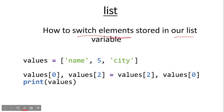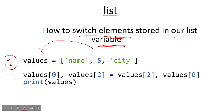How to switch elements stored in our list variable. First, we'll create our list variable called 'values' in our first line of code and store the following list inside our variable.